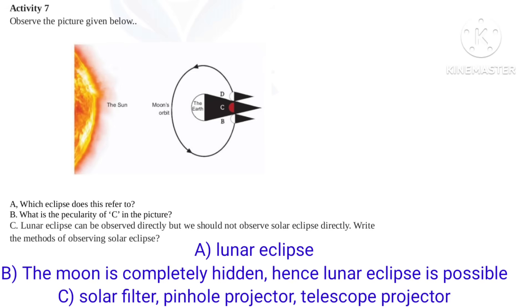What is the peculiarity of the sea shown in the picture? The moon is completely hidden; hence, a lunar eclipse is possible.